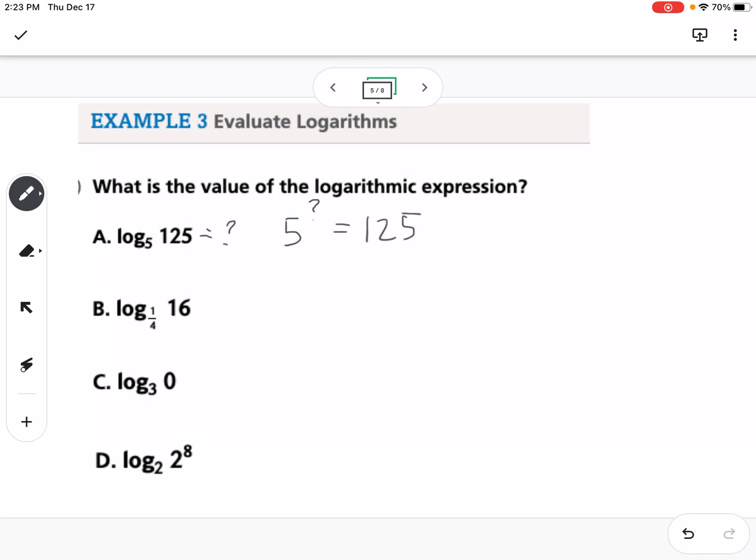We can think, 5 to what power equals 125, and the answer would be 3.